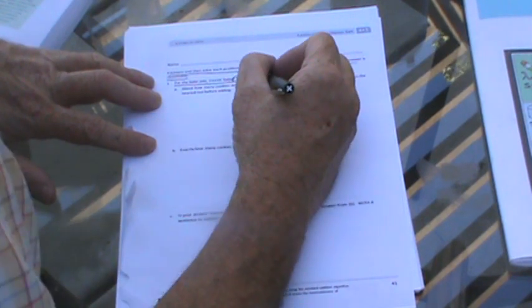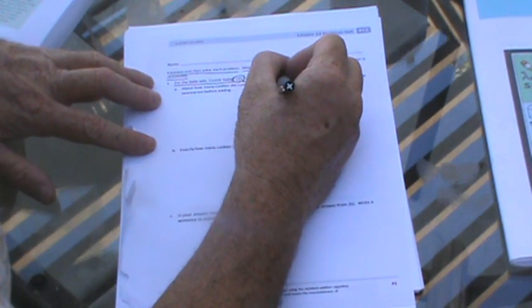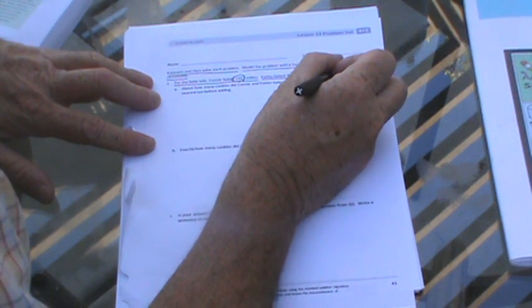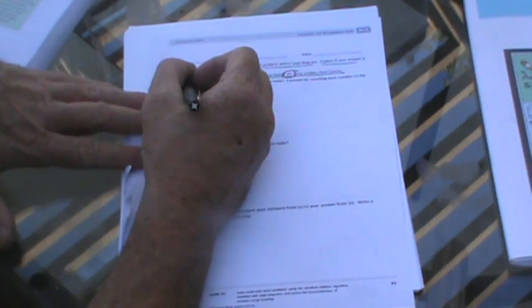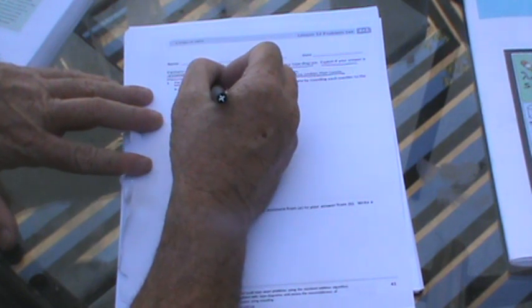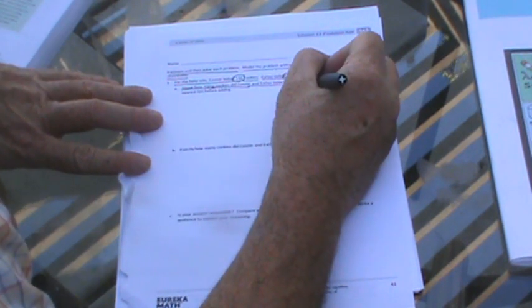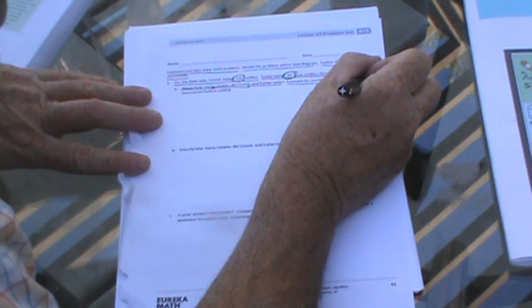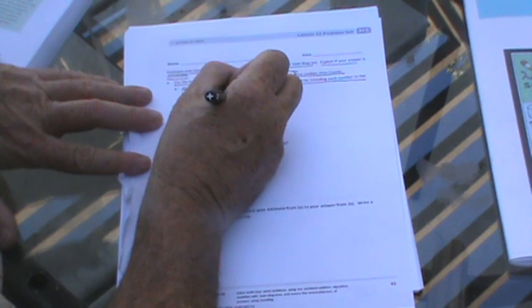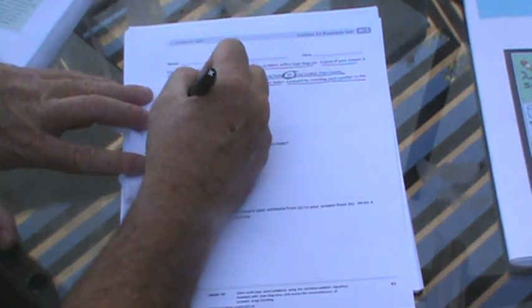For the bake sale, Connie baked 144 cookies. Esther baked 49 more cookies than Connie. We have a lot going on here already. Let's start with the simple problem. It says, about how many cookies did Connie and Esther bake?